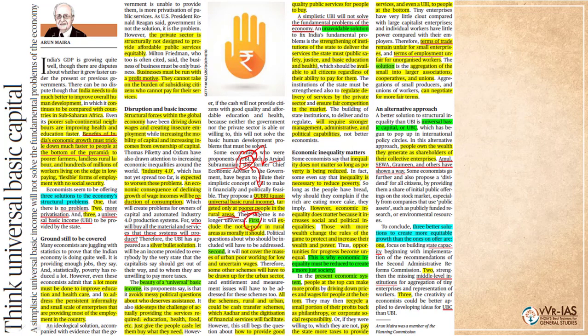QUBRI will exclude the not-so-poor in rural areas, which the author considers correct morally. Second, it will not cover the masses of urban poor working for low and uncertain wages, so other schemes will have to be drawn up for the urban sector. All these schemes — rural and urban — could be cash transfers, which Aadhaar and the digitization of financial services will facilitate. However, this still begs the question: how to provide good quality public services for the poor to buy?